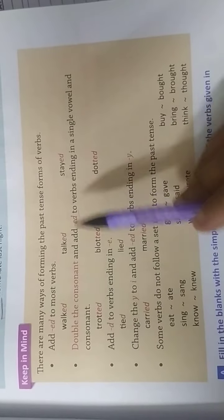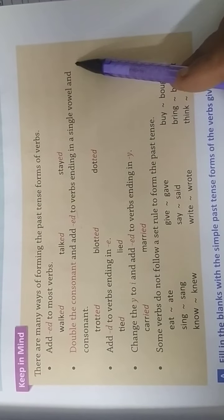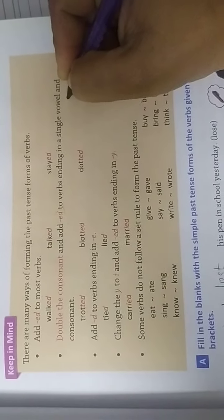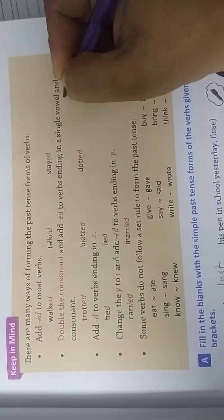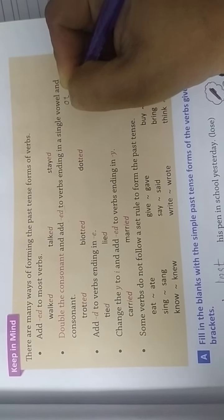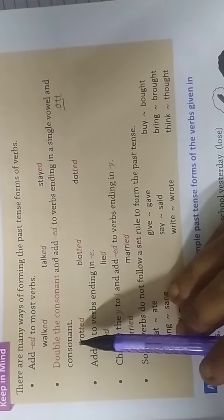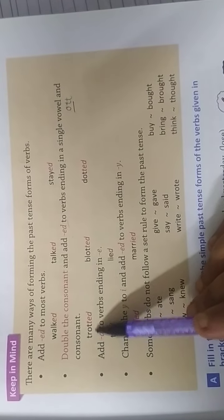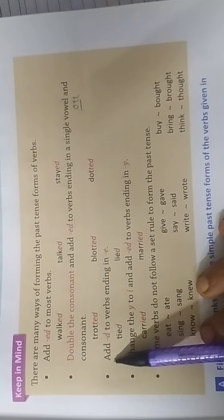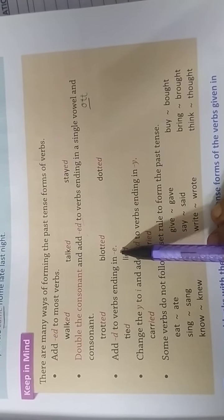We also double the consonant and add -ed for verbs ending in a single vowel followed by a consonant. For verbs that double the consonant, examples include: trotted, blotted, dotted.